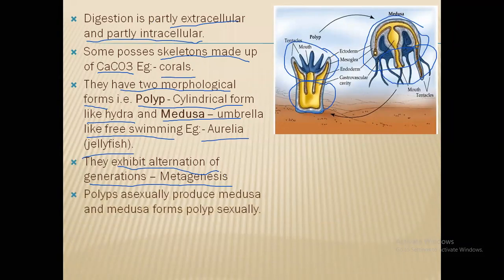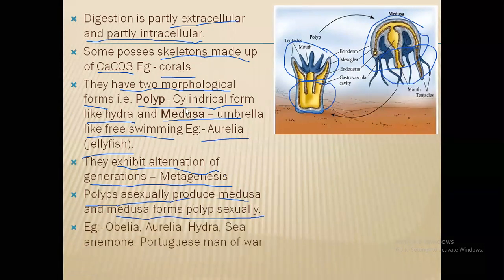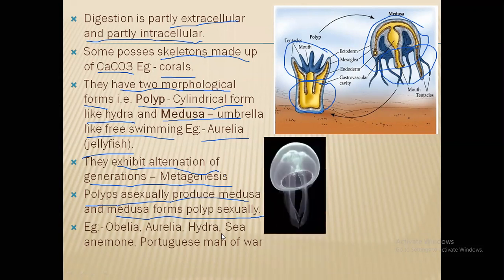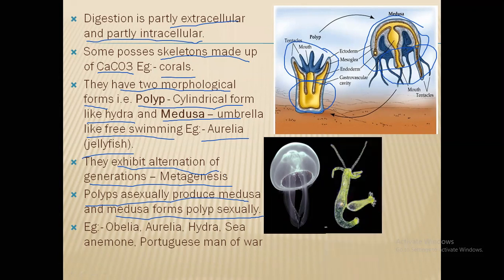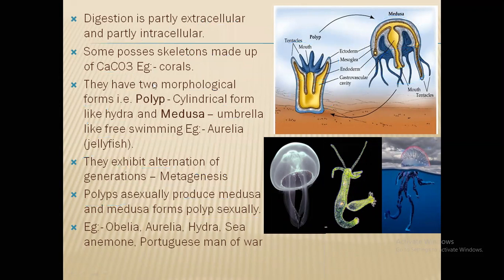Polyps carry out asexual reproduction whereas medusa carries out sexual reproduction. The polyp asexually produces medusa and medusa sexually produces the polyp — that is how their alternating cycle continues. Examples include Obelia, Aurelia (commonly known as jellyfish), Hydra, sea anemone, and the Portuguese man-of-war also known as Physalia.